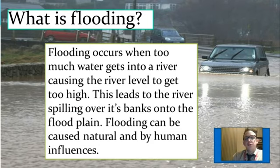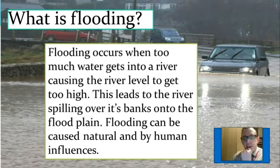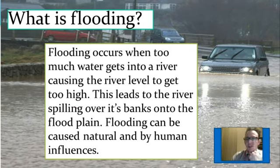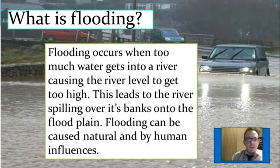First things first — what is flooding? Flooding occurs when there's too much water that gets into a river, causing the river level to get too high. This leads to a river spilling over its banks and onto the floodplain. Flooding can be caused by human and by natural influences, so it can be caused by all sorts of different things. We'll consider the physical factors first.